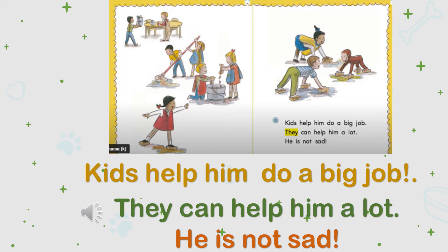George is sad. Kids help him do a big job. They can help him a lot. He is not sad. Students, do the kids help George? Yes or no? Yes, the kids help George. Who helped George — the kids or the teacher? Kids help George, not the teacher. How is George? Is George sad? No, George is not sad. Is George happy? Yes, George is happy.